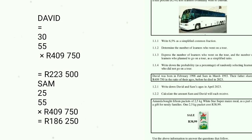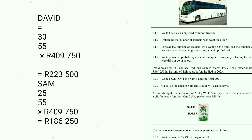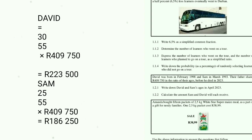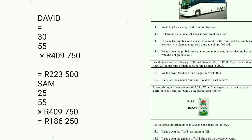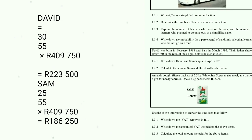Question 1.2.2: Calculate the amount Sam and David will each receive. For David: 25 ÷ 55 × 409 750 = R186 250. For Sam: 30 ÷ 55 × 409 750 = R223 500. The 55 comes from adding both ages: 30 + 25 = 55. That is the total ratio, and we share the amount proportionally according to each person's age.